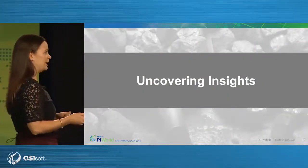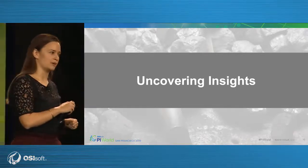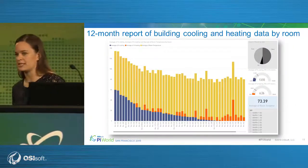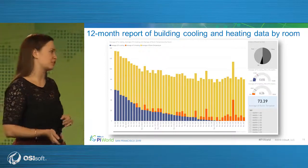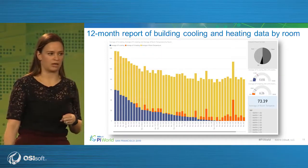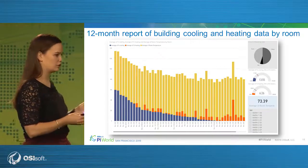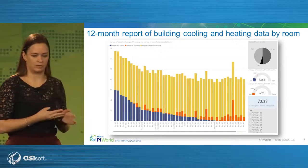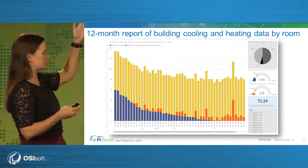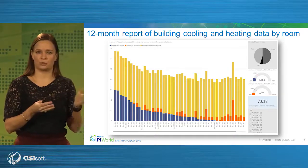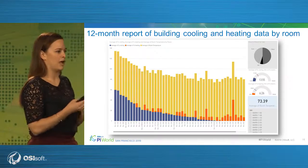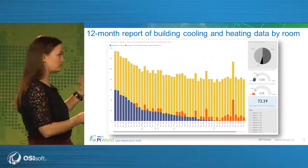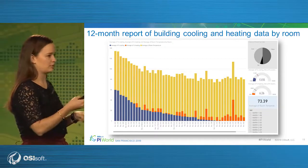In order to start understanding how you can uncover insights, we're going to walk you through a couple of examples of how OSIsoft has been doing the same thing with our technology. A very common use case is around business intelligence reporting. Here we have a BI dashboard with a bar chart showing the difference in the amount of cooling versus heating at our San Leandro tech campus building — a 12-month report where the columns represent individual rooms or groups of rooms controlled by the same devices. You can immediately see patterns: a lot more cooling than heating, with the top floor and one side of the building showing especially high cooling.